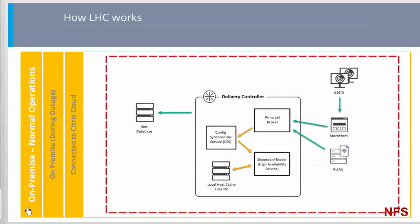How does LHC work on-premise during normal operations? The principal broker, the Citrix Broker Service, on a controller accepts connection requests from StoreFront and communicates with the site database to connect users with VDAs that are registered with the controller. A check is made every two minutes to determine whether changes have been made to the principal broker's configuration. Those changes could have been initiated by configuration actions such as changing a delivery group property, or system actions such as machine assignments. If a change has been made since the last check, the principal broker uses the Citrix Config Synchronizer Service, or CSS, to copy information to a secondary broker on the controller. All broker configuration data is copied, not just the items that have changed since the previous check. The secondary broker imports the data into a Microsoft SQL Server Express local database, or local DB, on the controller.